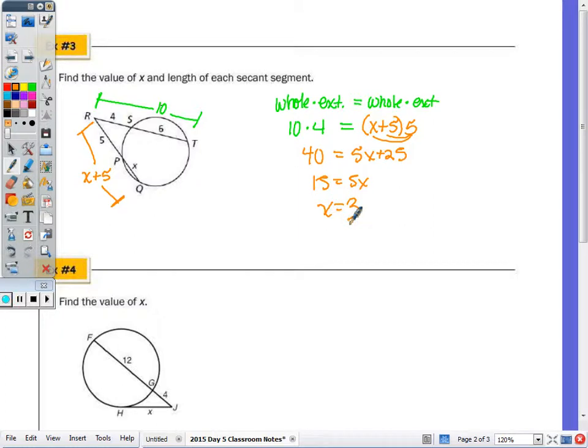The length of each secant segment. I know that RT, I already found that, was 10. Now substituting in the 3, 5 plus 3 is going to give me the length of RQ is 8.